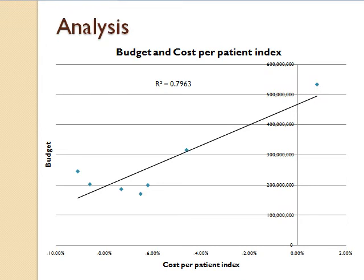This graph shows the relationship between budget and the cost per patient index. On the x-axis is the cost per patient index, while on the y-axis is the IT budget. The r-squared value is 0.79, which indicates a strong association between budget and cost per patient index.